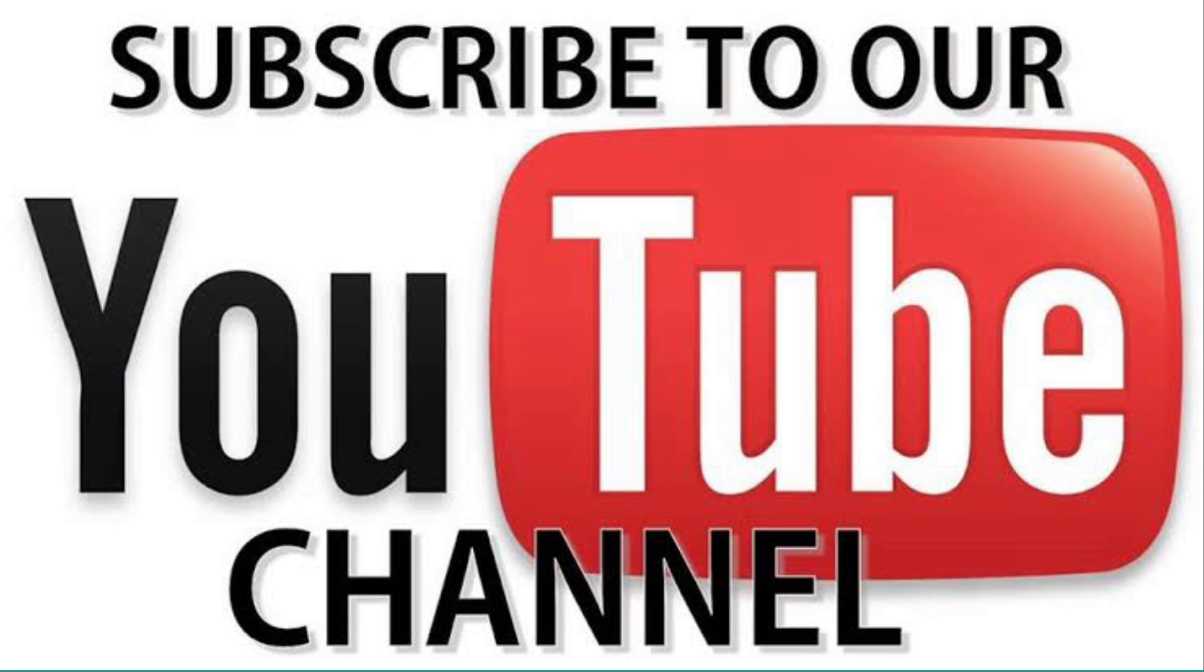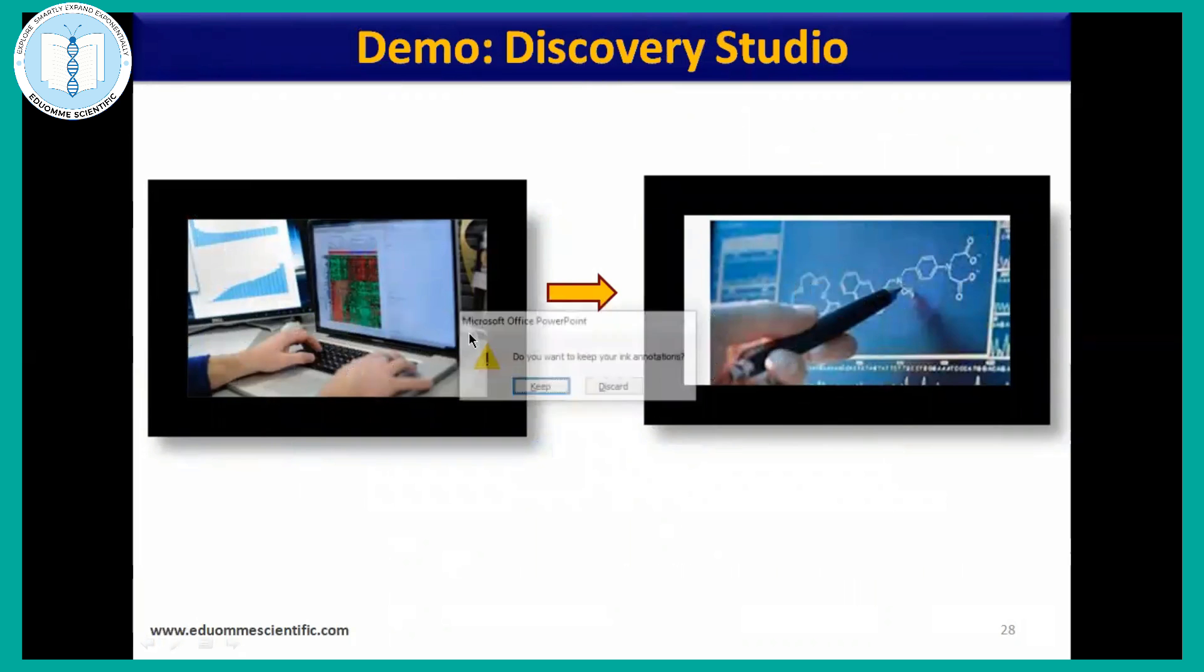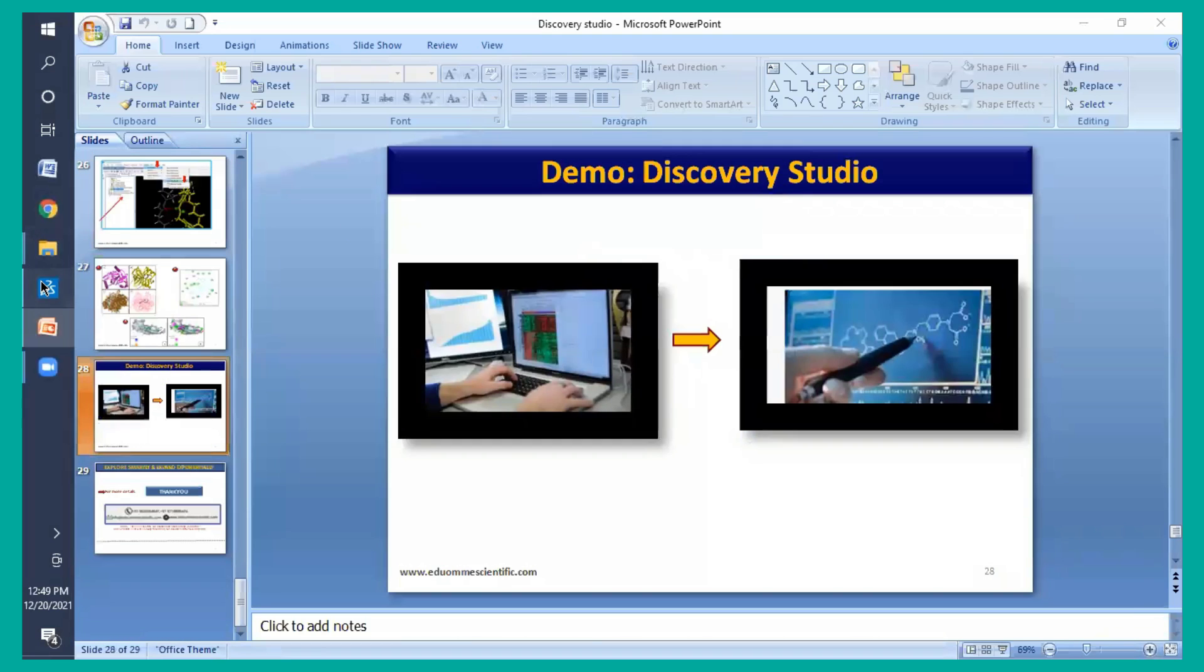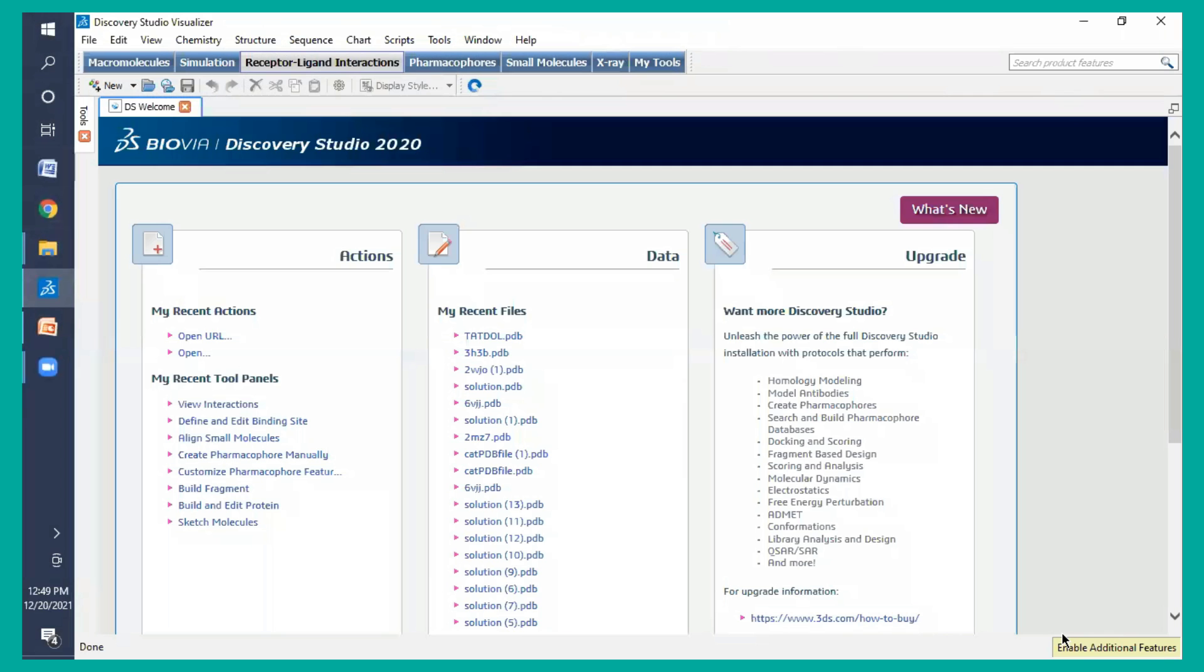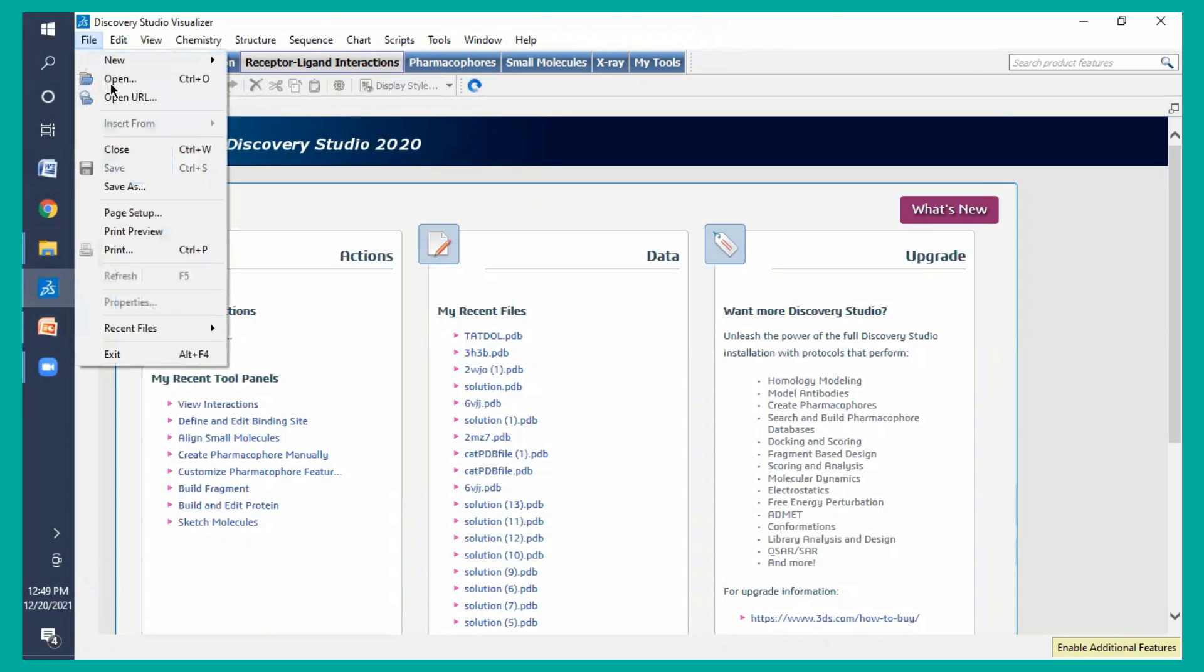Let me show some demo here. This is Discovery Studio. As I mentioned, when you will download this Discovery Studio, it will look like here. In file section, you have options for open. You may open from URL. You can exit from here. Recent files are here. Recent tool panel are here. These things, like I have done this PRAT, Dolutegravir, PDB. What I have recently shown you is present here.